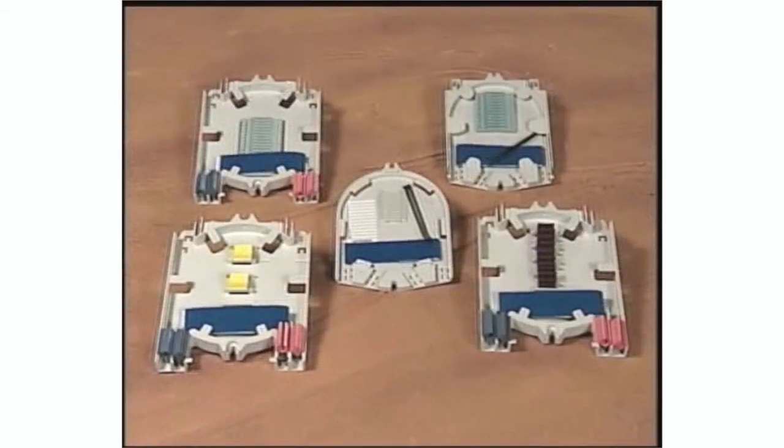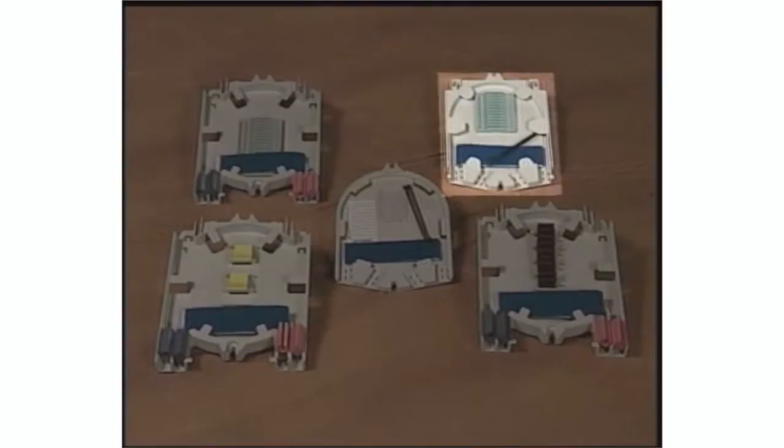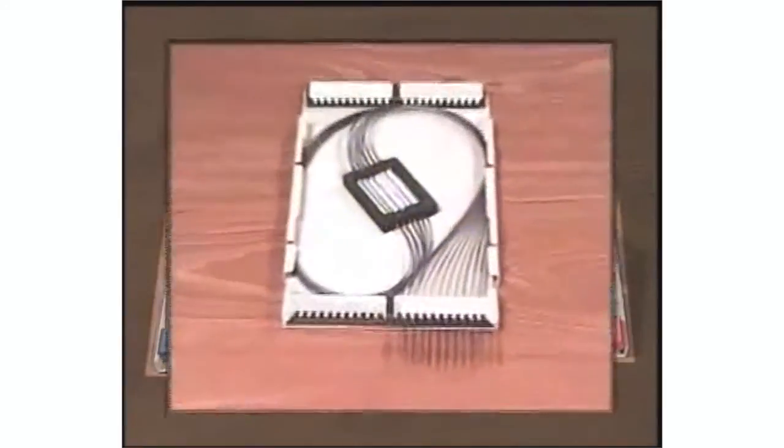Splice tray options for the Coyote inline runt closure include the low-profile tray, the standard tray, light-grip trays, and the short universal tray.